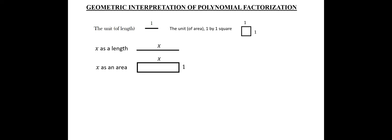but X as an area is a 1 by X rectangle. What is the area of this rectangle? It's exactly 1 times X or X times 1. So, that's X, but as an area.